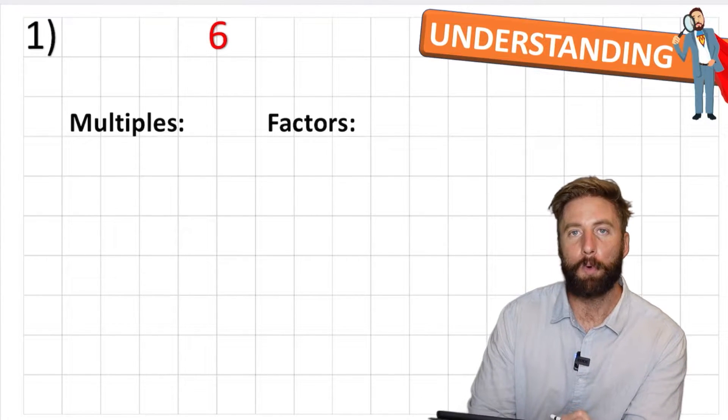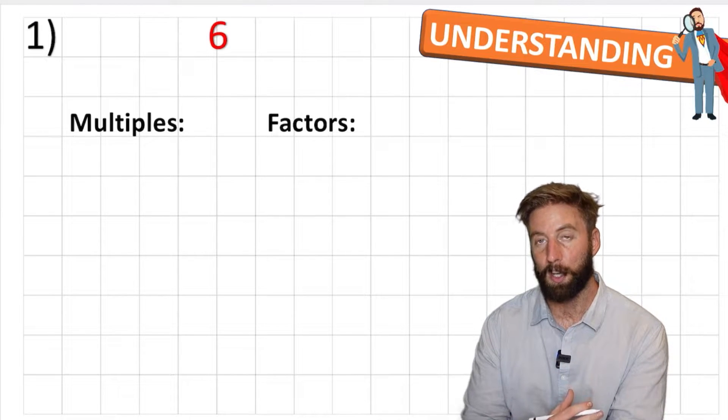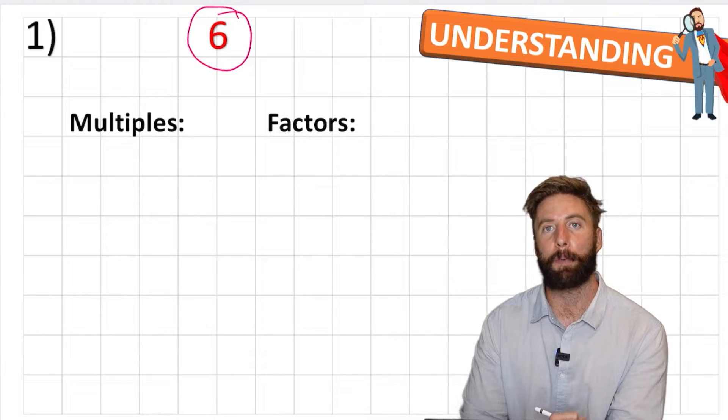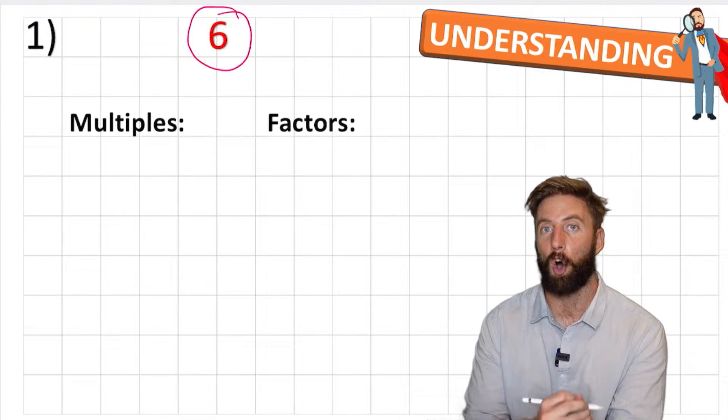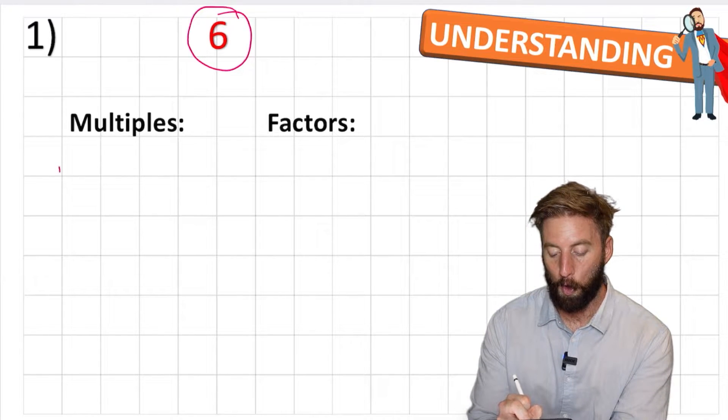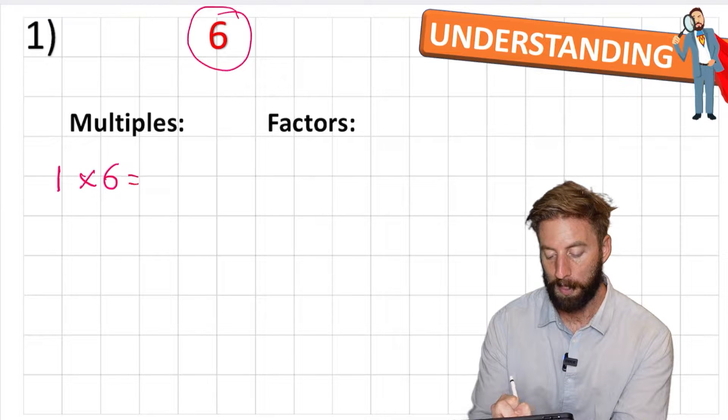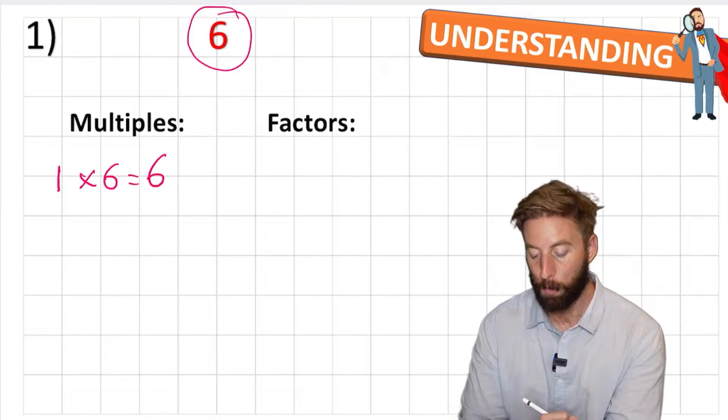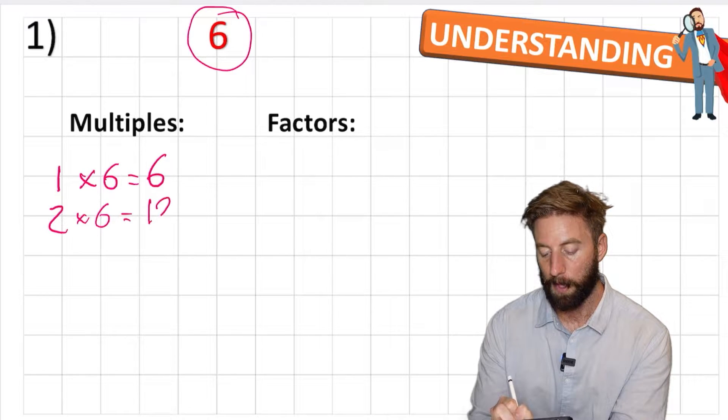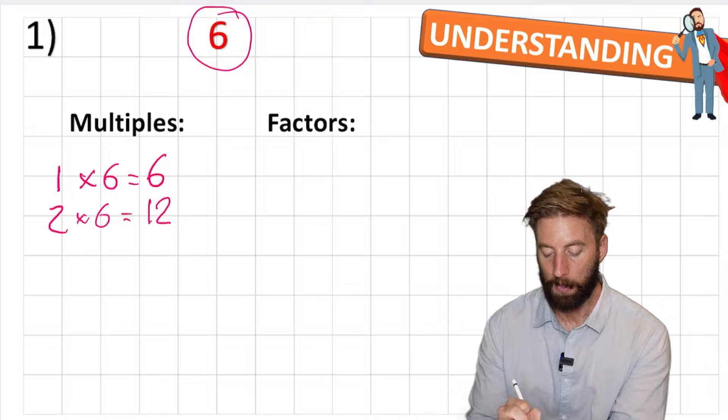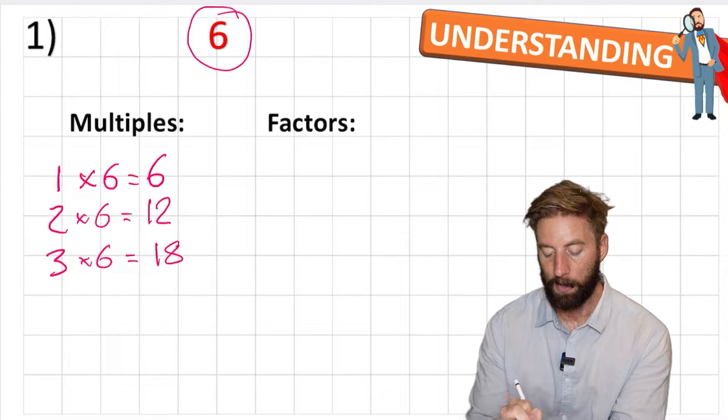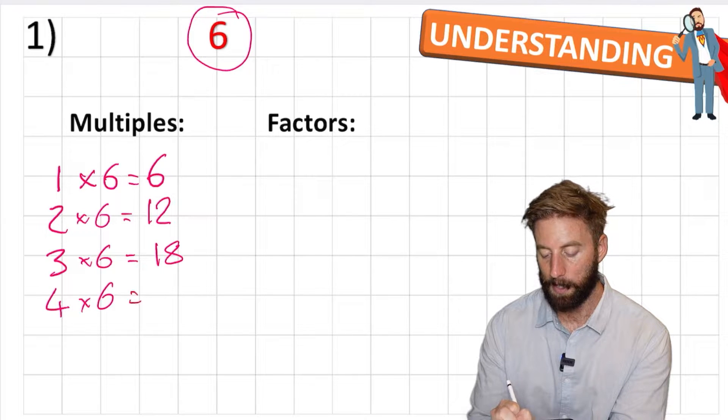So what does a multiple mean? Well a multiple means the product of the number that we're looking at, which in this case is 6, times by any integer, and an integer just means a whole number. So there's a logical sequence to this. We can do 1 times 6 equals 6, so there's our first multiple. Then we could do 2 times 6 equals 12. So 12 would be a multiple. 3 times 6 is 18. 4 times 6 is 24.